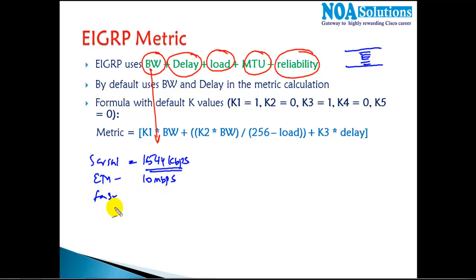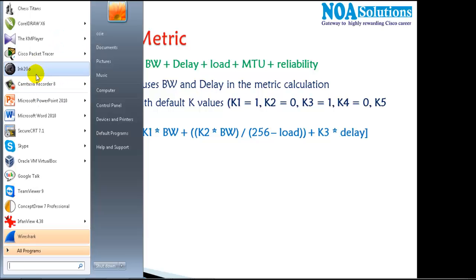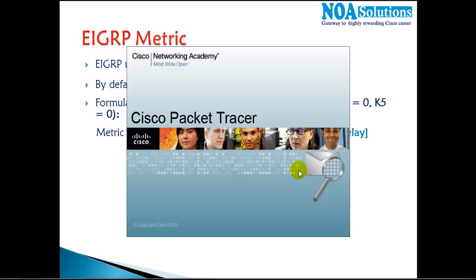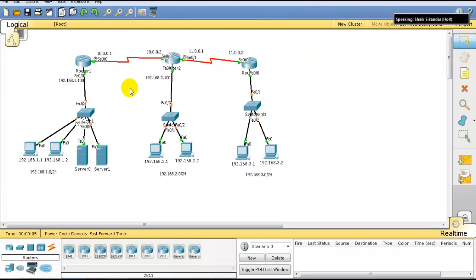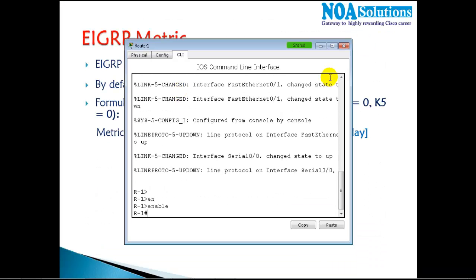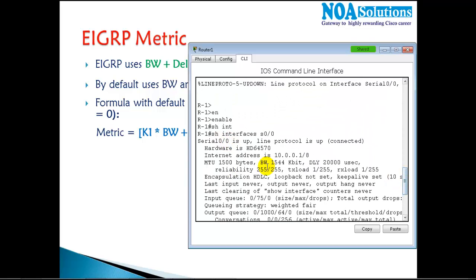The default bandwidth on Ethernet links is 10 Mbps and on Fast Ethernet interfaces it is 100 Mbps. Every interface has a specific bandwidth, and we can change it if needed. To verify these parameters, we use the command 'show interface s0/0'. When you run that command, you can see these five parameters including the default values.